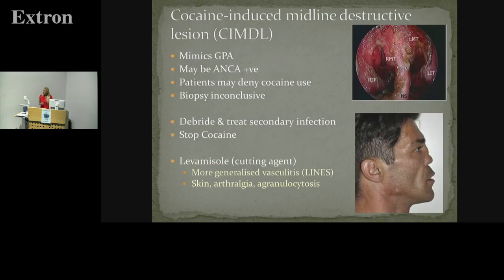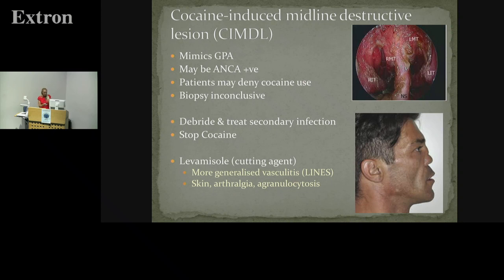Cocaine-induced midline lesions are probably far more common than vasculitis, at least in London. They mimic a lot of the pictures of granulomatous disease and may also be ANCA positive — it induces a type of low-grade vasculitis that can even continue once they stop using cocaine. These patients almost always deny cocaine use or admit to past use and claim they gave up ten years ago. It's usually what the cocaine is mixed with — Levamisole — and you get almost complete loss of the nose and severe saddling. It can be very difficult to distinguish from GPA or the vasculitic conditions.